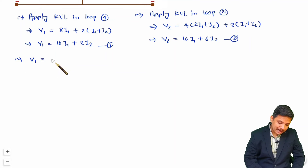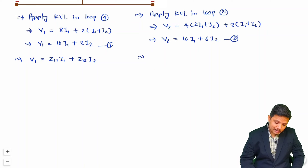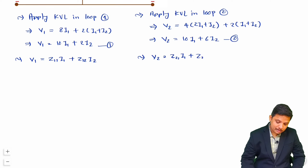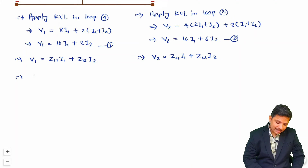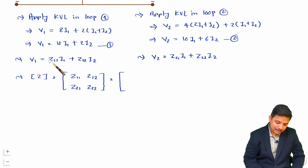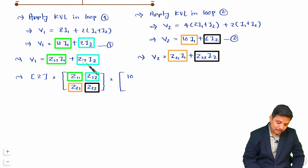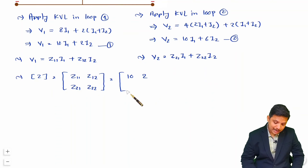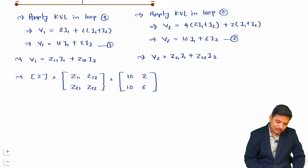Comparing with the Z parameter equations — V1 = Z11·i1 + Z12·i2 and V2 = Z21·i1 + Z22·i2 — we can extract the Z matrix. Z11 = 10, Z12 = 2, Z21 = 10, Z22 = 6. So we now have the Z matrix.